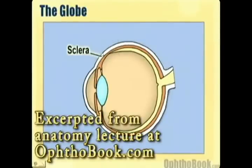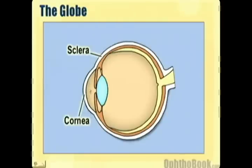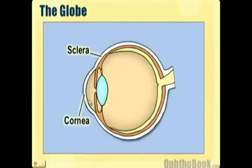The outside of the eyeball is formed by the sclera, a type-1 collagen layer that is pretty tough. The eye is only about 24 millimeters long, about an inch. The front of the eye is formed by the cornea, which is the clear area. Interestingly, the sclera and cornea are made of the same type of collagen, but the cornea is clear because its collagen is better organized and, more importantly, the cornea is relatively dehydrated compared to the sclera. At the back, the sclera forms the optic sheath going to the brain.